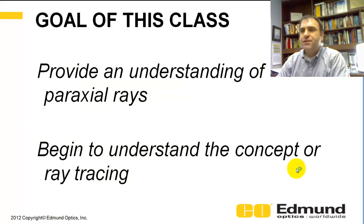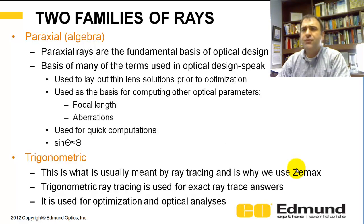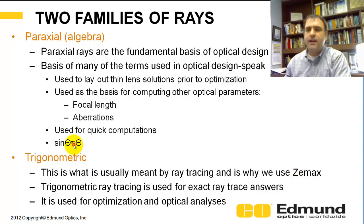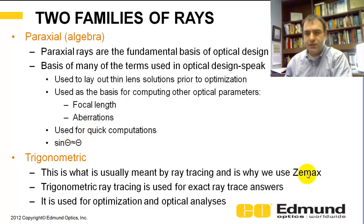The goal of this class is to provide an understanding of paraxial rays, and to begin understanding ray tracing and gaining an appreciation for what goes into it. There are two families of rays. Paraxial is where sine theta equals theta — the small angle approximation, or tangent theta equals theta. These are the fundamental basis for all basic optical parameters in an optical system, helping us compute things like focal length and aberrations.